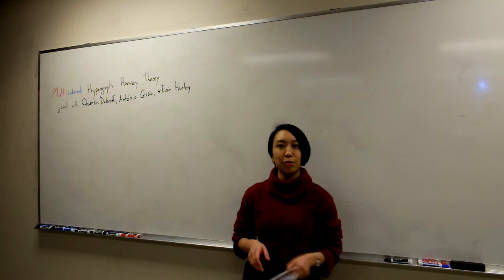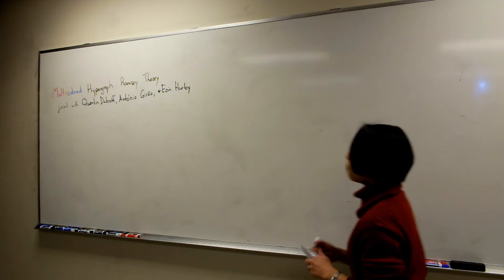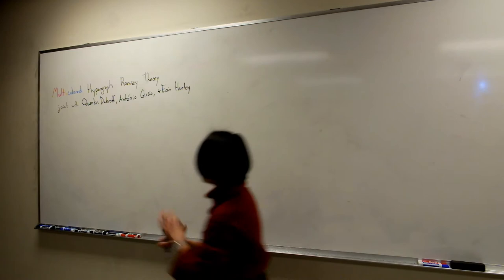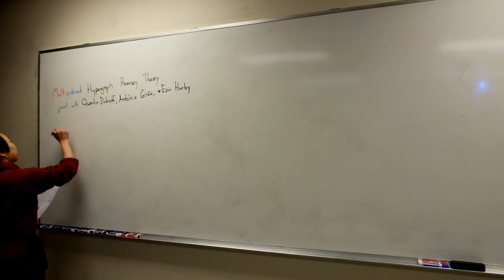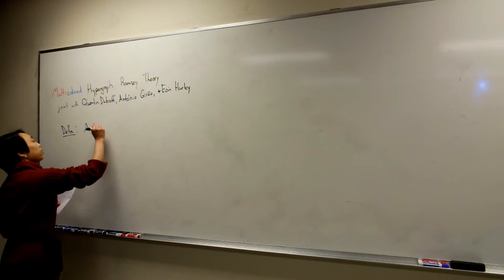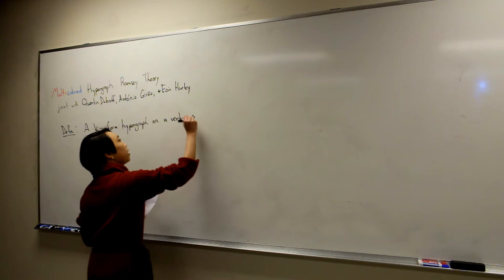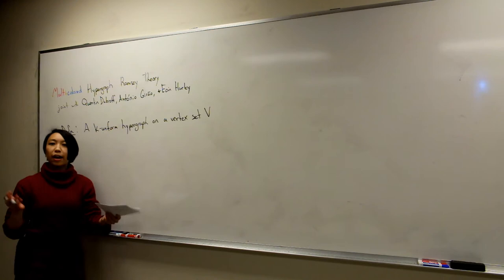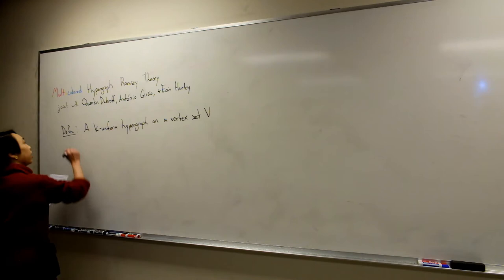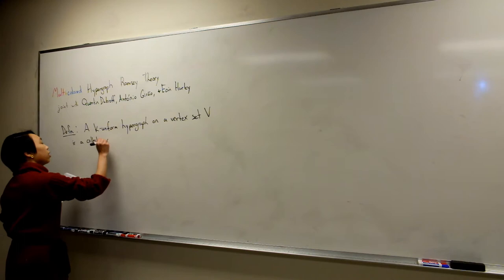Let me start by setting up some notation and giving some definitions to make sure we're all on the same page. Today I'm going to be talking exclusively about K-uniform hypergraphs. A K-uniform hypergraph has a set of vertices V and a collection of edges, where edges are just subsets of the vertices.